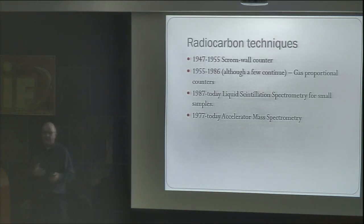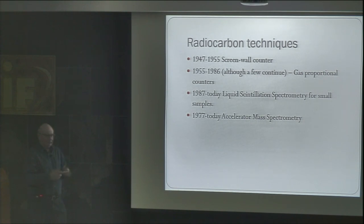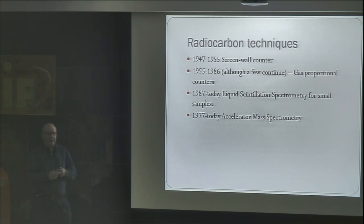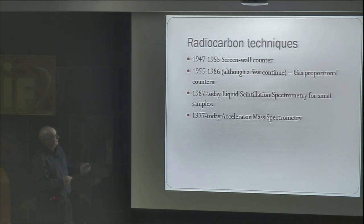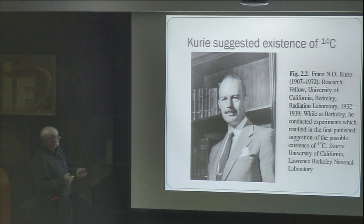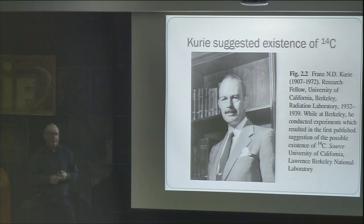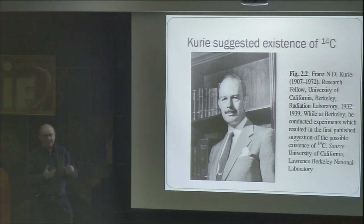In the beginning there was Willard Libby, who had worked on the Manhattan Project. In 1946, he wrote a paper estimating that you could produce enough carbon-14 in the atmosphere that it should be measurable and could be used as a dating technique. Prior to this, sometime before the Second World War, Franz Kurie had actually proposed the existence of carbon-14, which was confirmed in the 1930s. C-14 was unusual because it has a much longer half-life than expected.